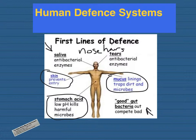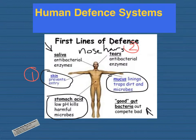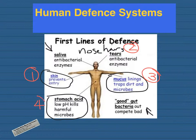So to recap the four main things you need to know: the skin, the nose hairs, the mucus lining in the windpipe and trachea, and the stomach acid.